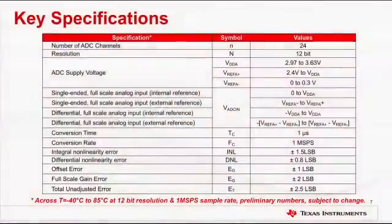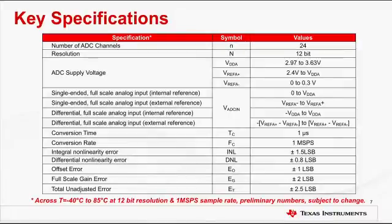Let us take a quick look at the key specifications of the ADC module in TM4C123X microcontrollers. As I have mentioned previously, the ADC in TM4C123X devices has been designed from the ground up, and the performance and accuracy has been greatly improved. I won't read the table, but I would like to mention that these are preliminary numbers. While comparing these specifications against the competition, please make sure that the numbers being compared are valid for the entire temperature range, that is from minus 40°C to 85°C, and are measured at comparable resolution and sample rate.